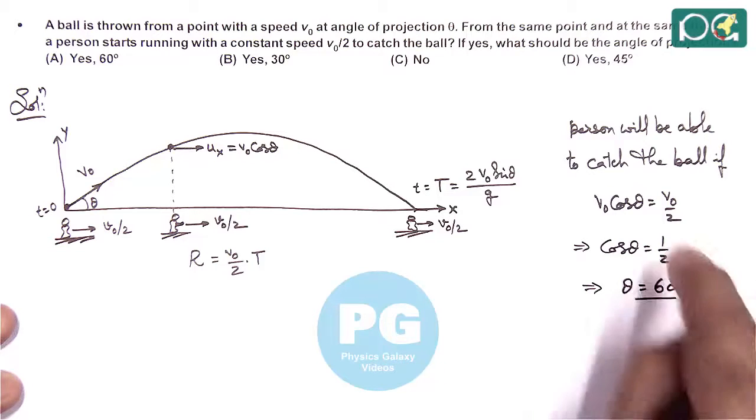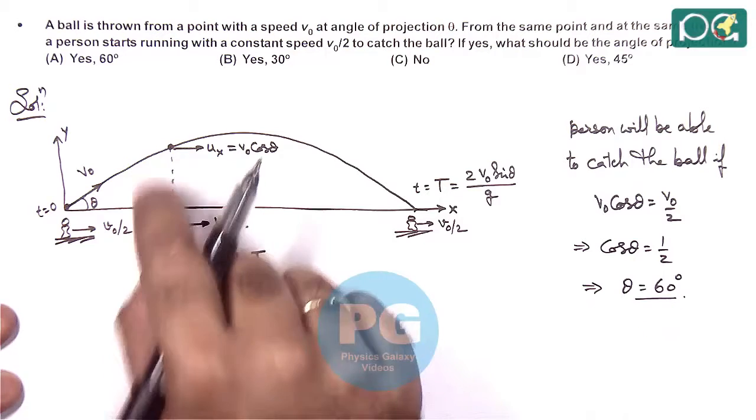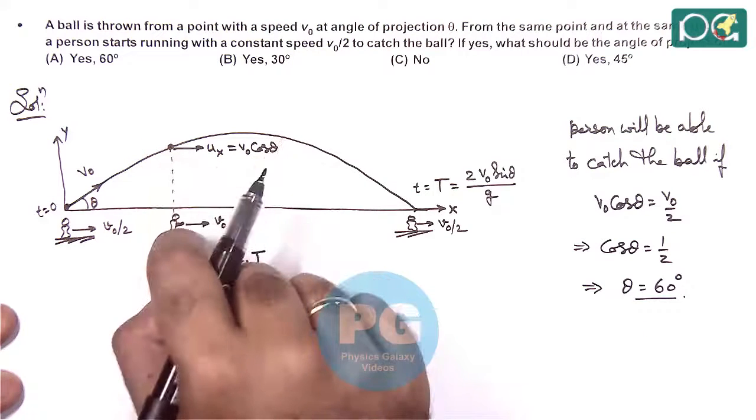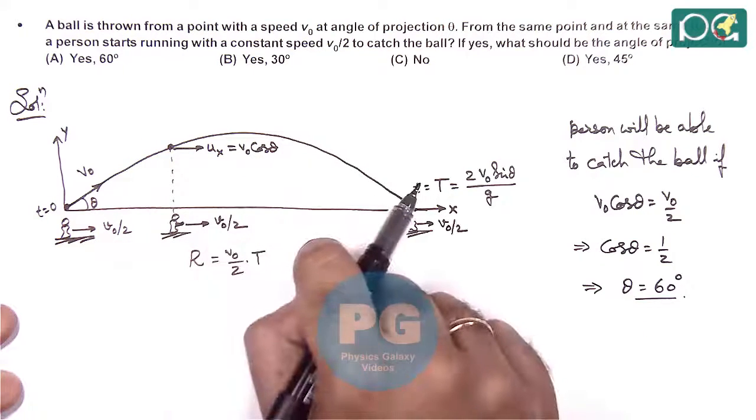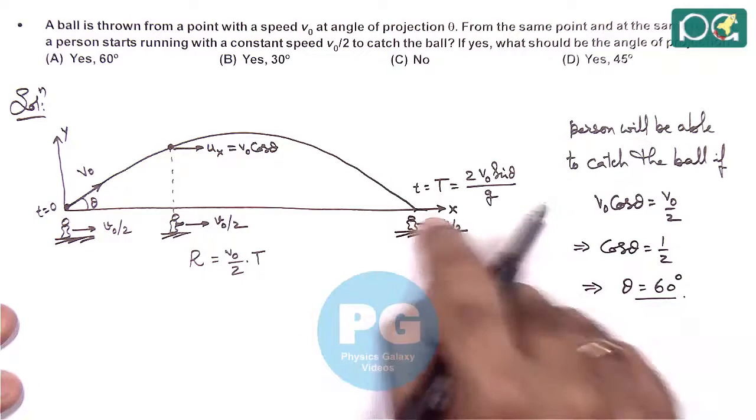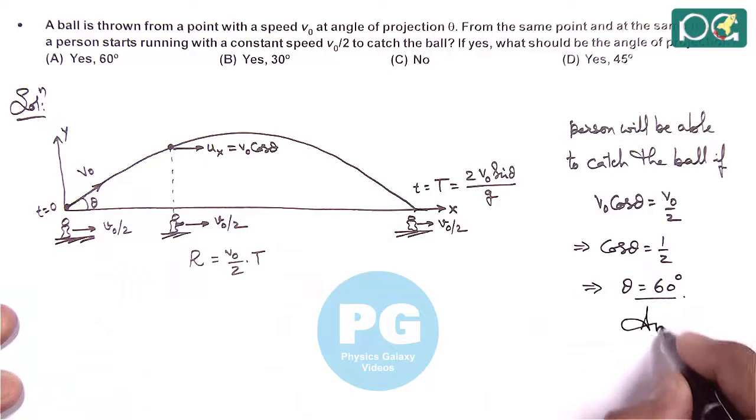So when theta is 60 degrees, the ball will always be vertically above the person who is running along, so he will be able to catch the ball. So the answer would be yes, 60 degrees. Our answer is option A.